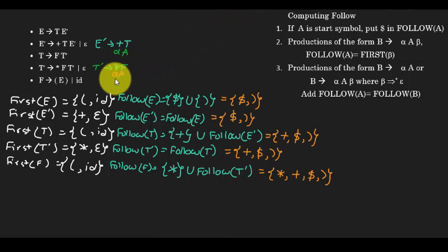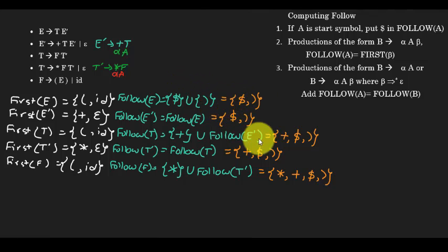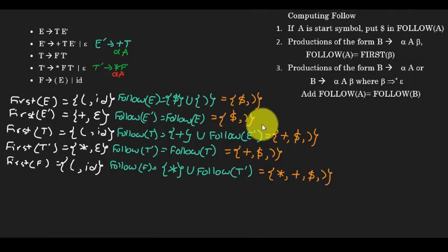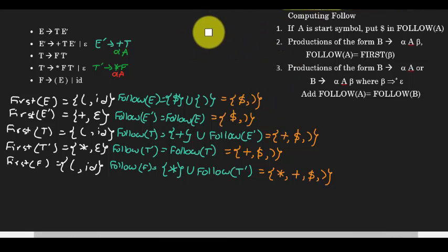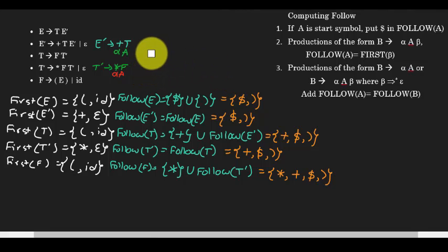Finally, these are the complete follow sets for each variable. Follow of E is {dollar, closing parenthesis}. After unifying all the terminals from the chained follow relationships, we get the final follow sets. You can pause the video to jot these down and check your answers. We'll now move on to a second example to clarify this further.